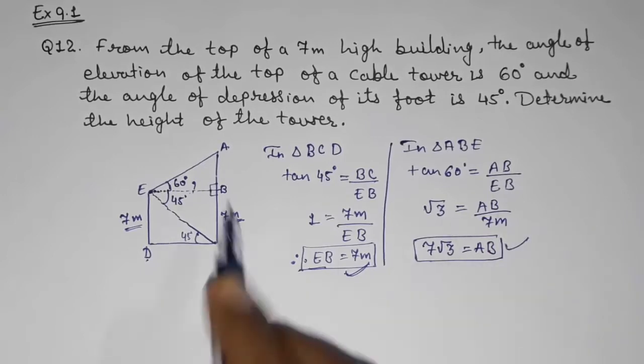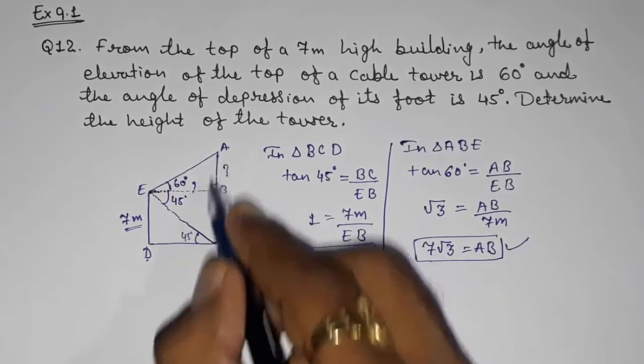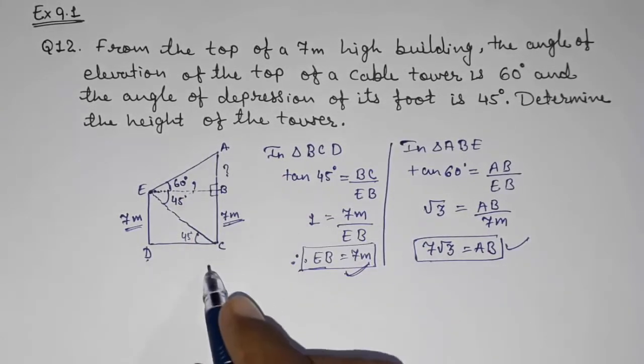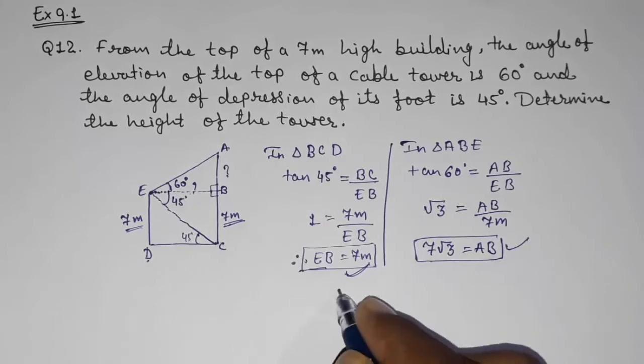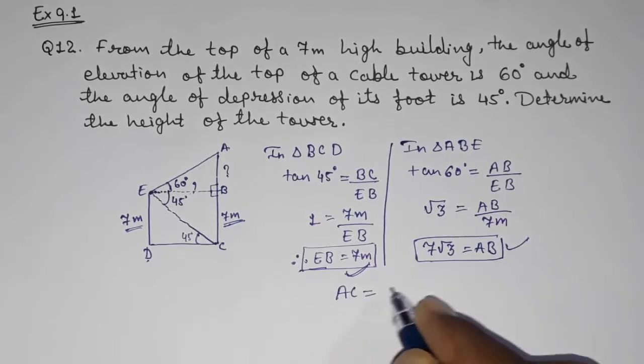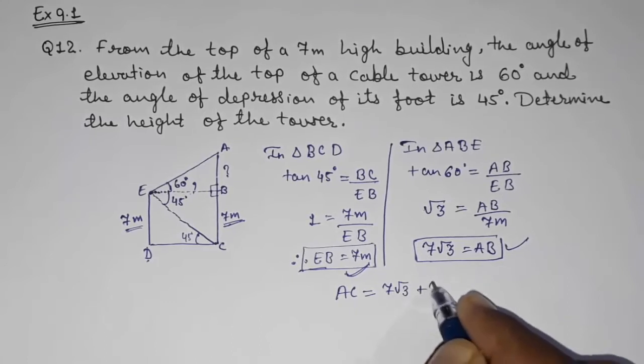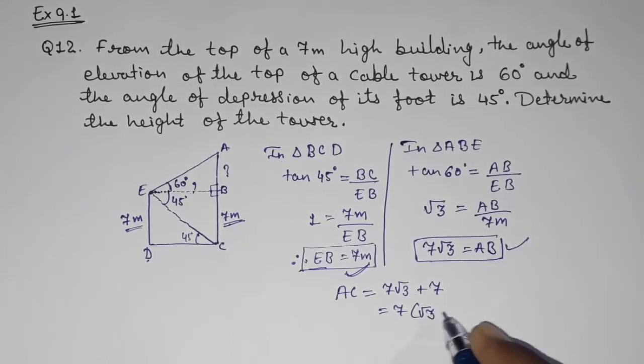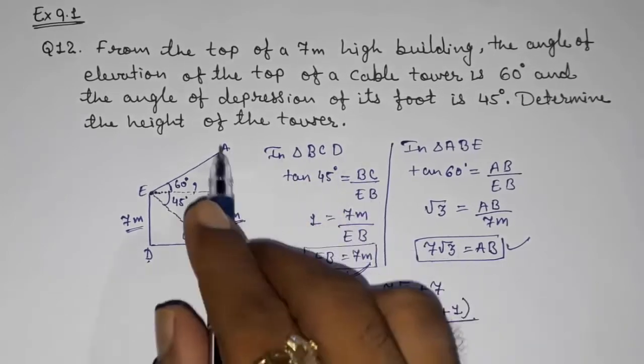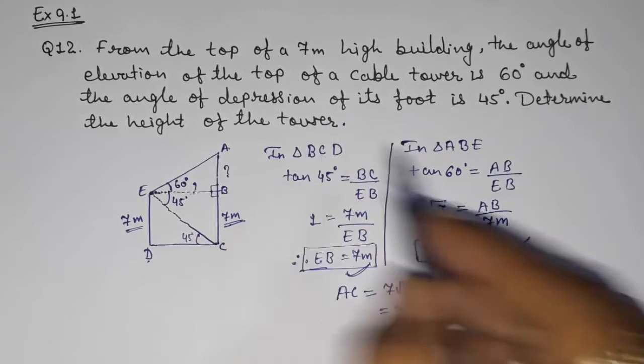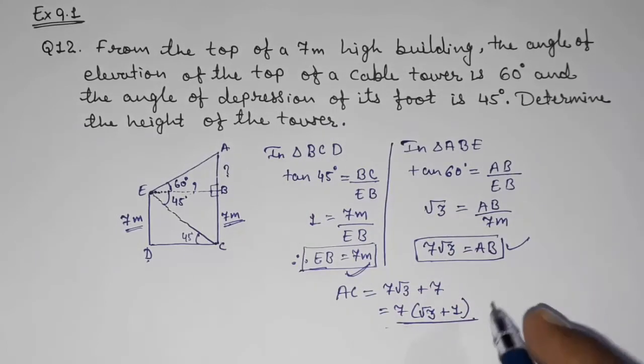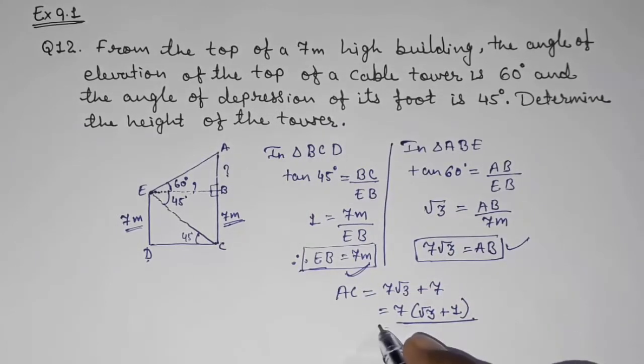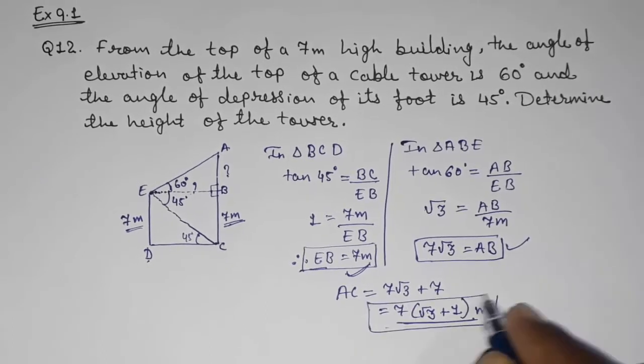But we don't have to find out only this AB. We have to find out the whole height of the tower. So whole height of the tower AC, that will be equals to 7 root 3 plus 7. Take out 7 common, so root 3, 7 into bracket root 3 plus 1. They had not given us the value of root 3, so we are going to keep the answer as it is only. So the height of the tower is 7 into bracket root 3 plus 1 meters.